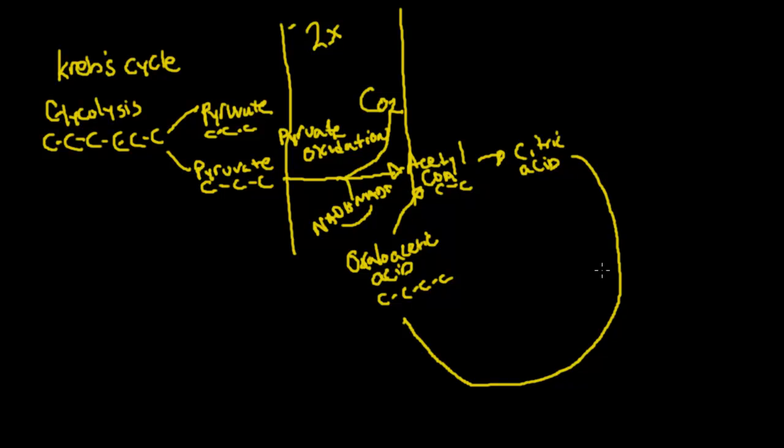So everything that I show you that happens in this cycle is going to be times two. So the citric acid, you notice here we have four carbons and two carbons. The citric acid is going to have six carbons.